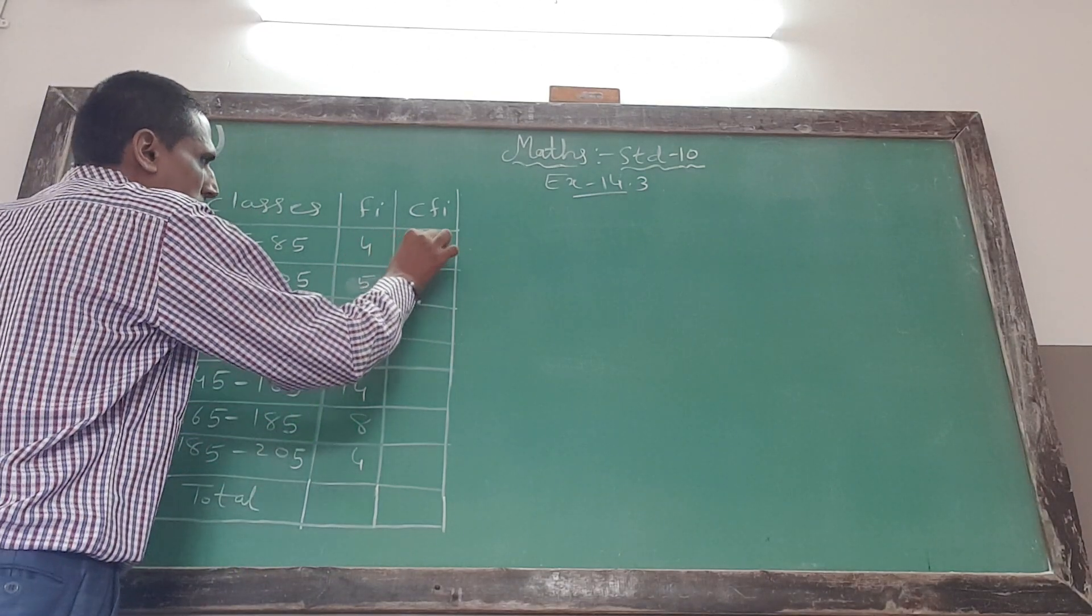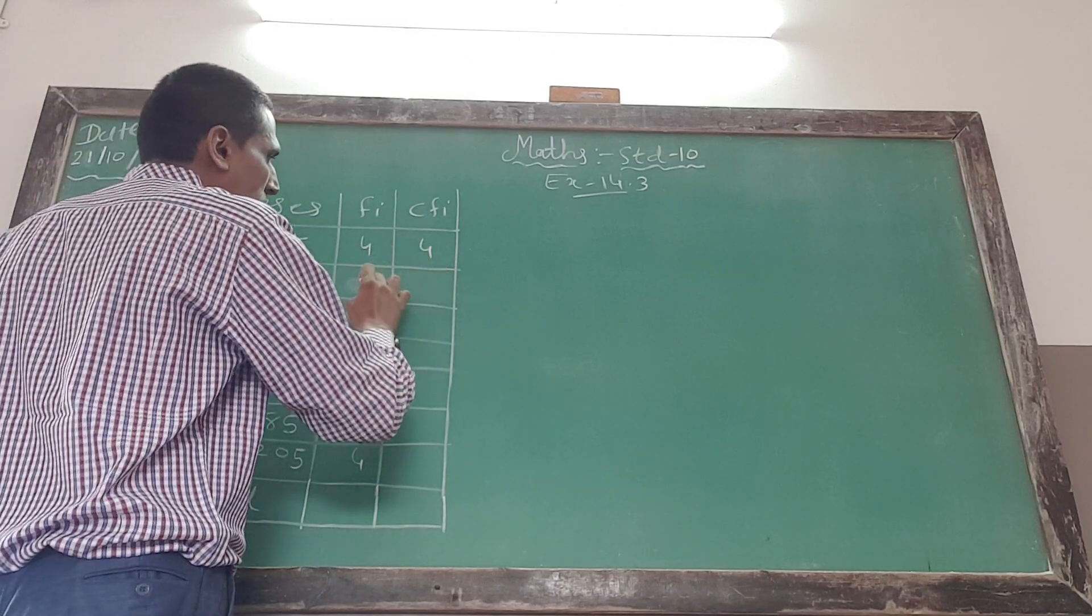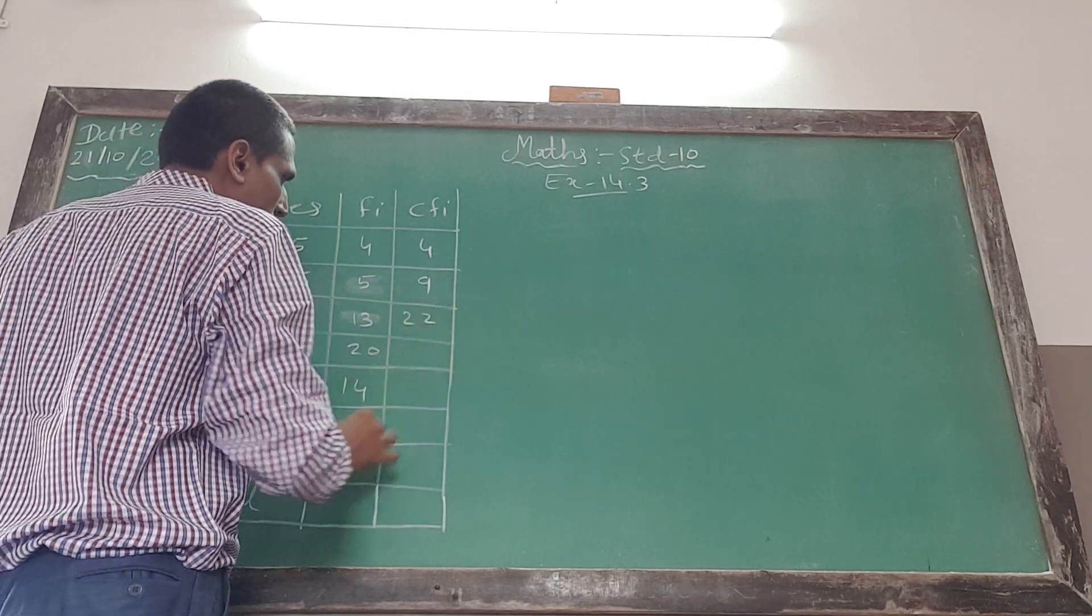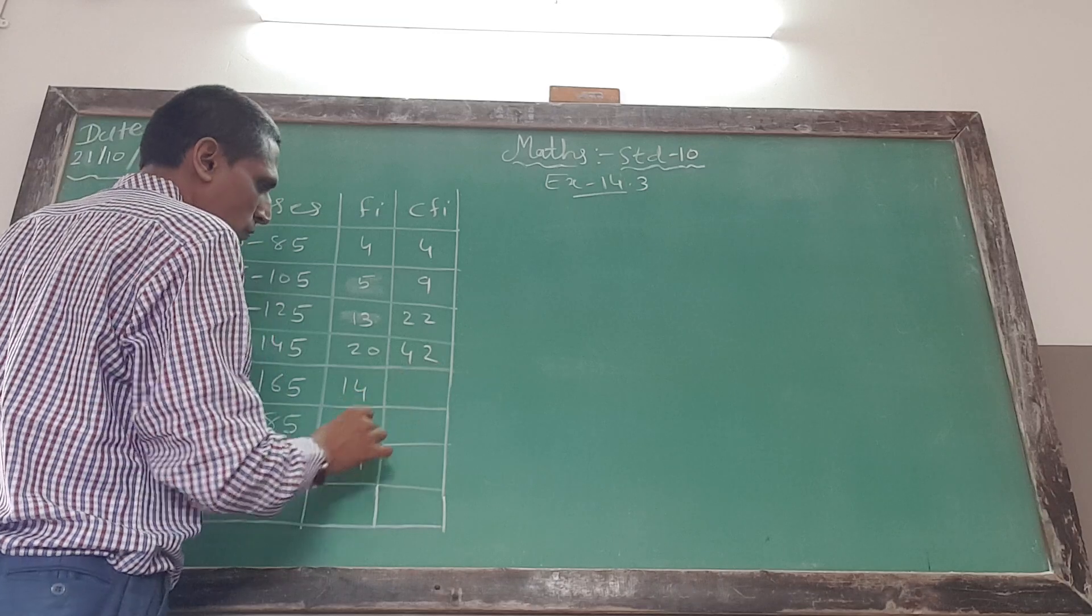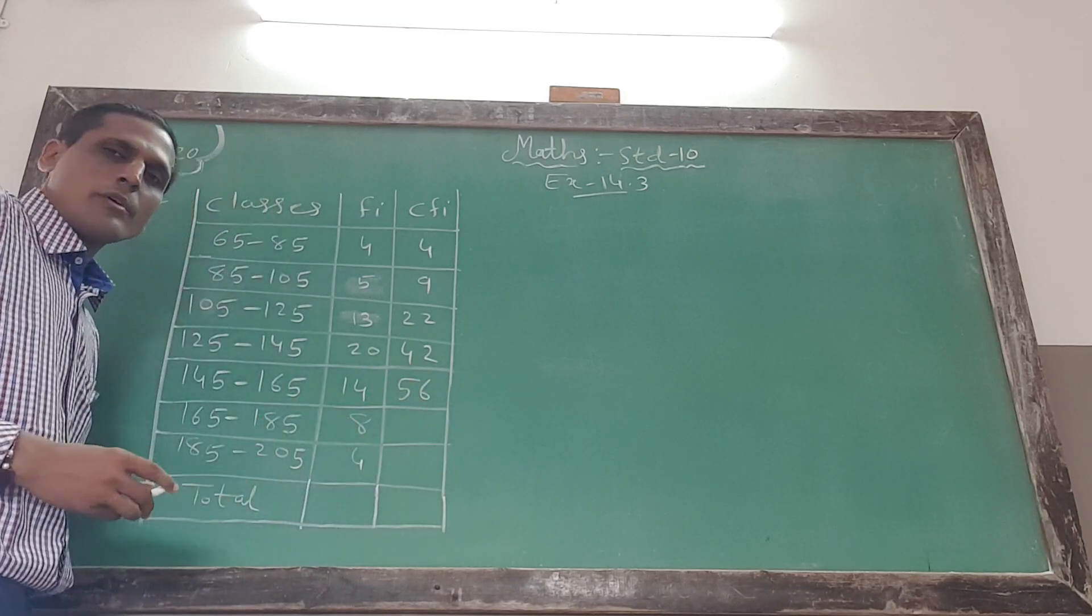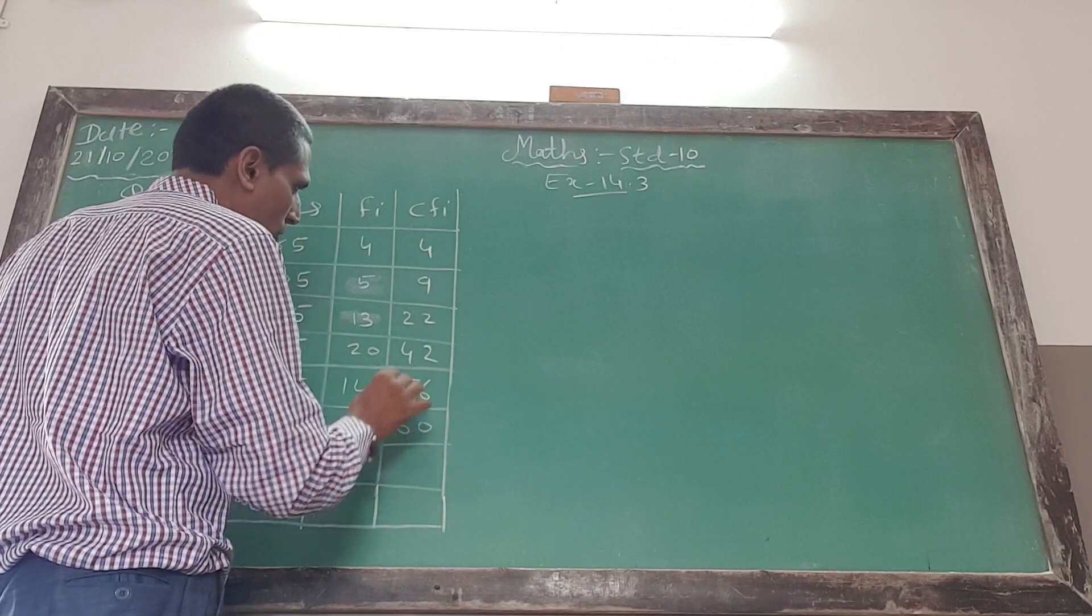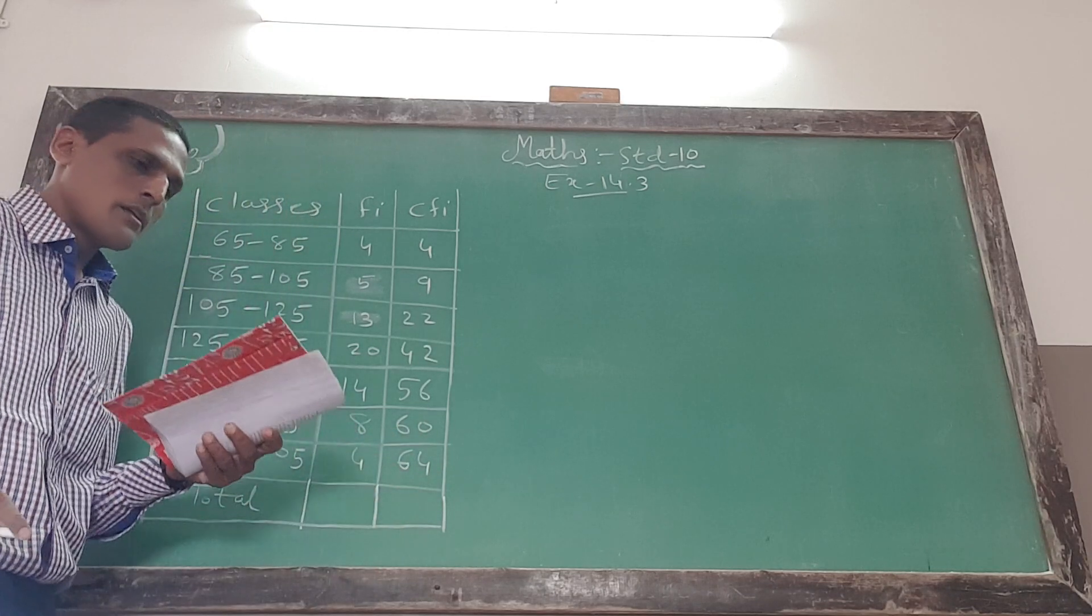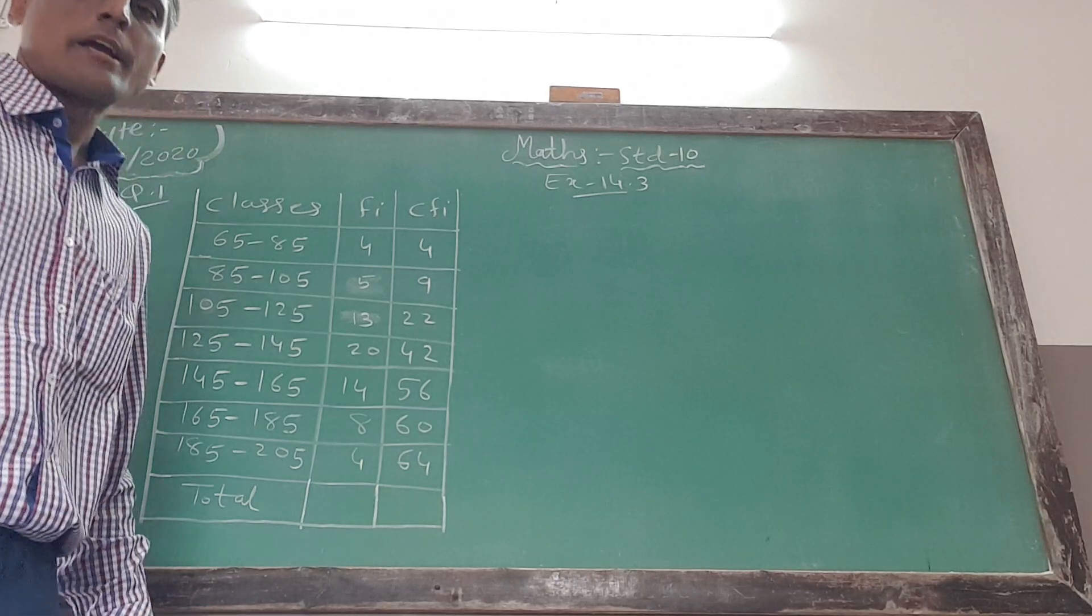Classes: 5 to 15, frequency 5. 15 to 25, frequency 9. 25 to 35, frequency 20. 35 to 45, frequency 22. 45 to 55, frequency 42. 55 to 65, frequency 46. 65 to 75, frequency 56. 75 to 85, frequency 8. Total 60, 64, 68.